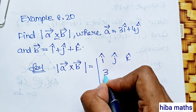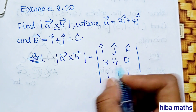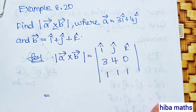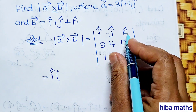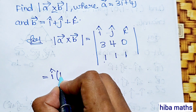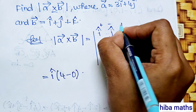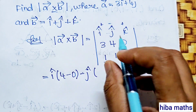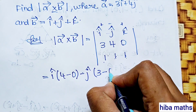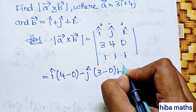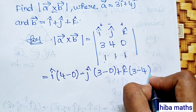Setting up the determinant: first row i, j, k; second row 3, 4, 0 (for vector a); third row 1, 1, 1 (for vector b). Expanding: i(4·1 - 0·1) - j(3·1 - 0·1) + k(3·1 - 4·1) = i(4) - j(3) + k(-1) = 4i - 3j - k.